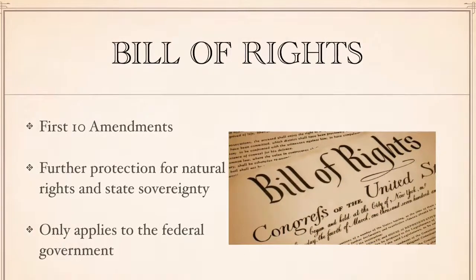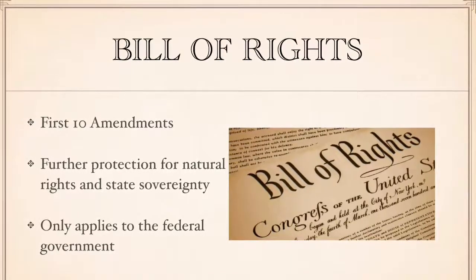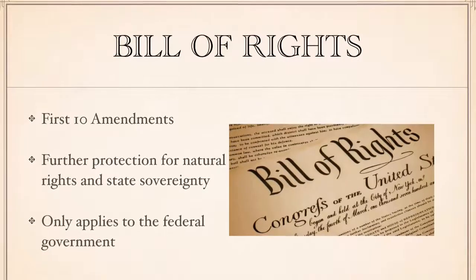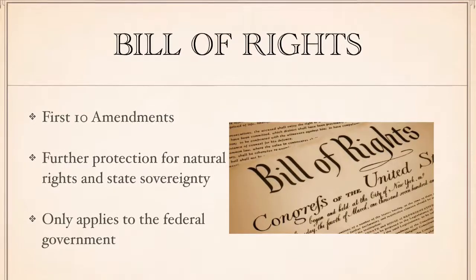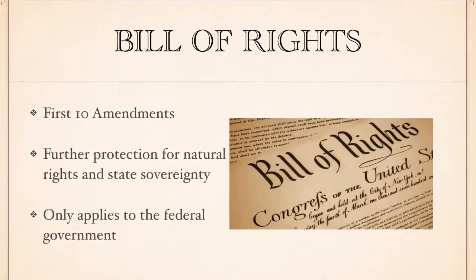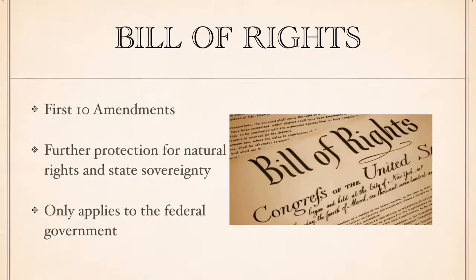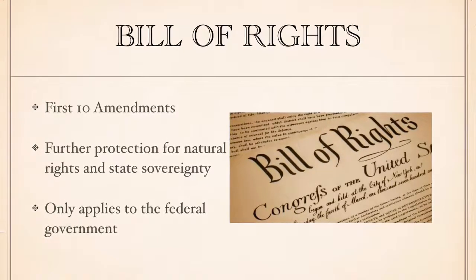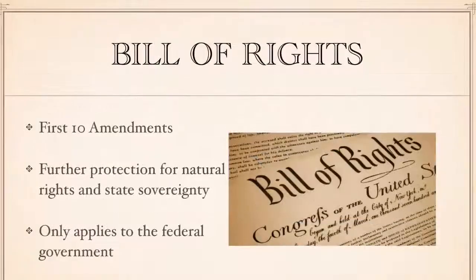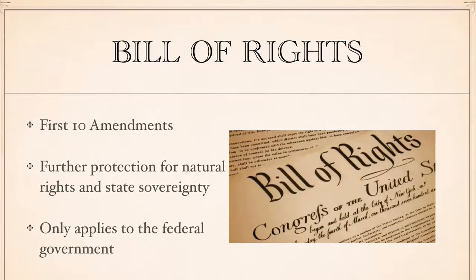Finally, the Bill of Rights. Why were the Bill of Rights — the first ten amendments — added to the Constitution? Those concerned that the new Constitution may be interpreted in a way that would gradually centralize more and more power at the expense of state sovereignty and individual liberty insisted that a Bill of Rights be added to further protect state sovereignty and people's natural rights from this new federal government. Some argued it wasn't necessary, since the powers delegated in the Constitution did not include the authority to infringe on any of the rights eventually listed in the Bill of Rights. But in case advocates of a stronger central government found ways to manipulate the meaning of the Constitution's words, the Bill of Rights was seen as added protection — a just-in-case.